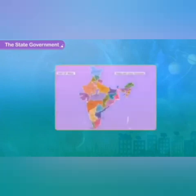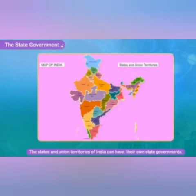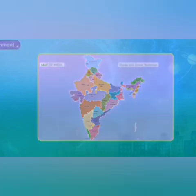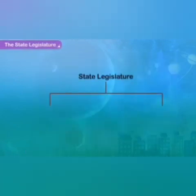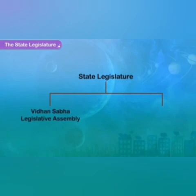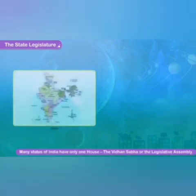The 28 states and 9 Union Territories of India have a provision to have their own state governments. The state legislature has two houses: the Vidhan Sabha or state legislative assembly, and the Vidhan Parishad or the legislative council. Many states of India have only one house, that is the Vidhan Sabha or the legislative assembly.